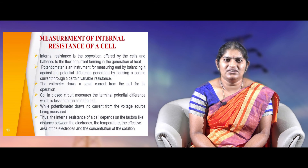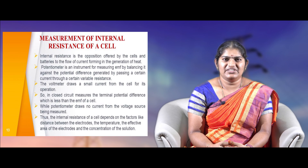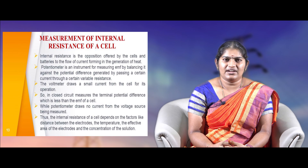A potentiometer is an instrument used to measure the EMF of a cell by balancing it against the potential difference generated by passing a certain current through a variable resistor. Since a voltmeter draws a small current through the cell, it measures the terminal potential difference in a closed circuit, which is less than the actual EMF. Using a potentiometer, no current is drawn from the voltage source being measured, making it more accurate.